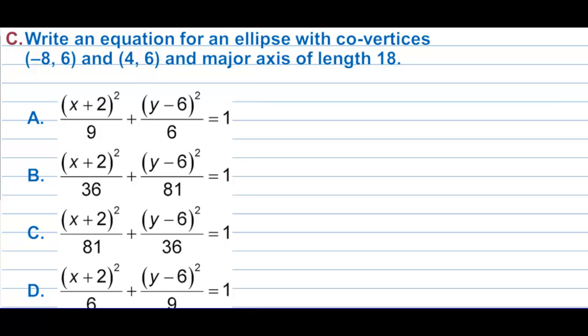Write an equation for an ellipse with co-vertices (-8,6) and (4,6), and a major axis length of 18.